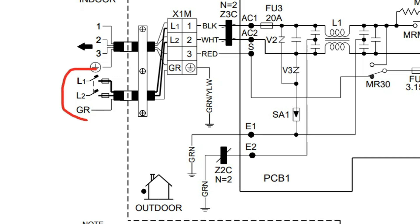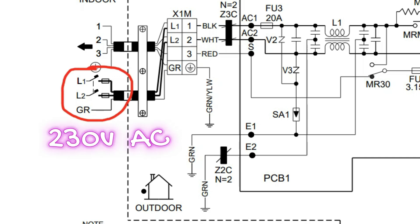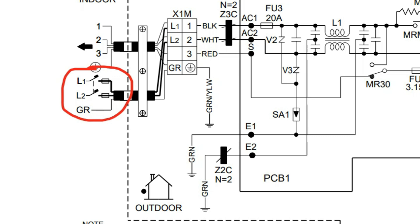Here we see leg 1 and leg 2, so that means we're dealing with 230 volts. On a side note, there are some mini-split systems — particularly smaller ones at 6,000, 9,000, or 12,000 BTUs — that might actually run on 120 volts. But anything higher than that is definitely going to be 230, and sometimes even the lower ones are also 230, so keep that in mind.